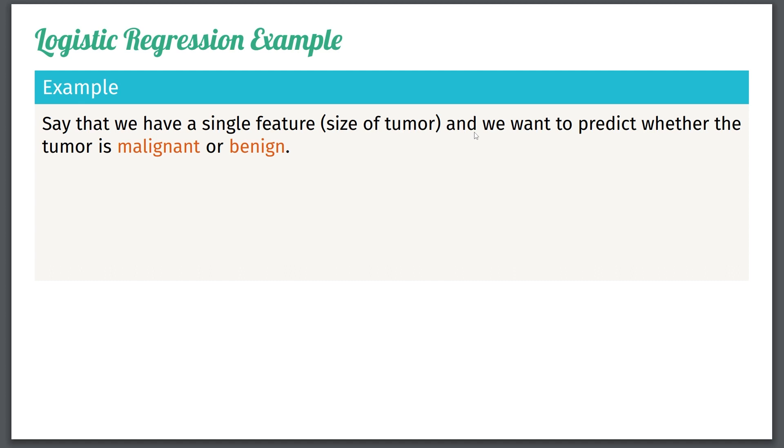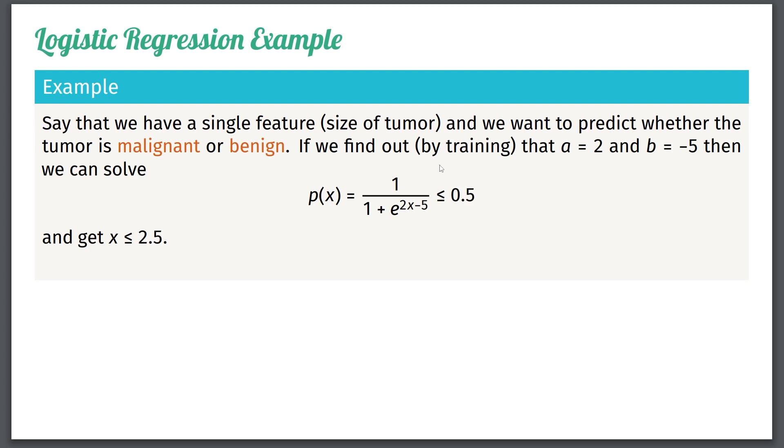So here we have two classes, malignant or benign. If we find out by doing this logistic regression training that a is equal to 2 and b is equal to minus 5, these two parameters, then we essentially ask for a new observation, whether p of the new observation is less than 0.5.